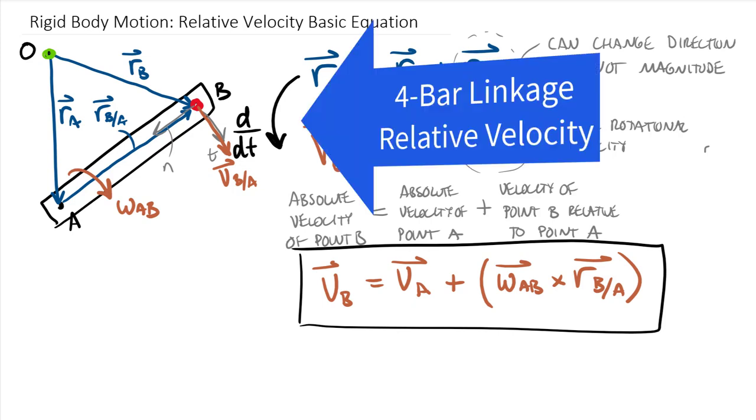Now, if you take a look at the next video as well, we'll actually apply this to a four bar linkage system, which will really better define the velocities of A and B as absolute, and hopefully give you a better idea of that relative term in between.